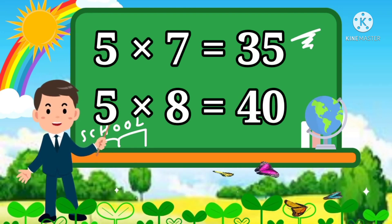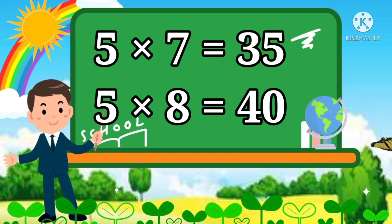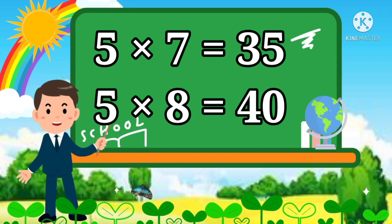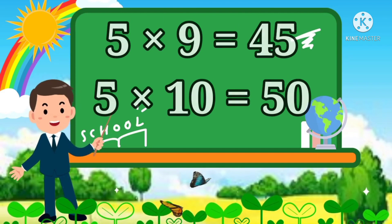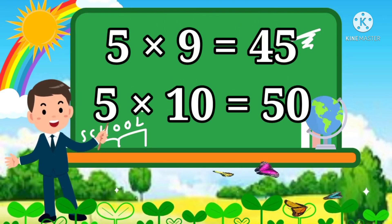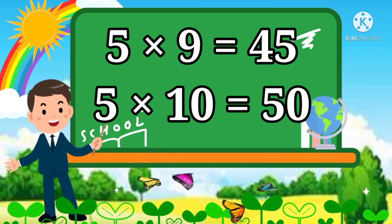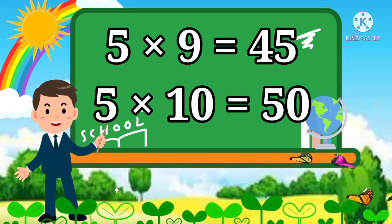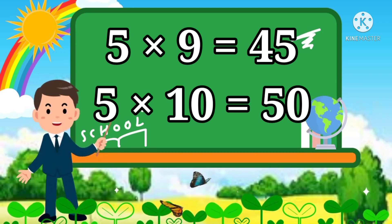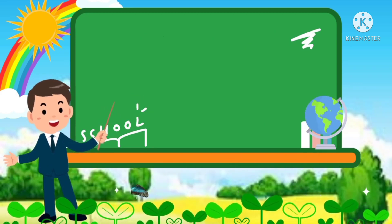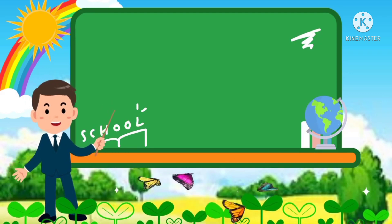5 7s are 35. 5 8s are 40. 5 9s are 45. 5 10s are 50.